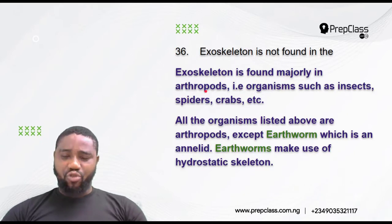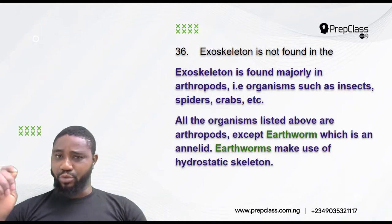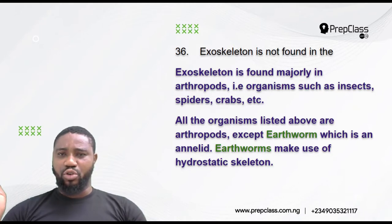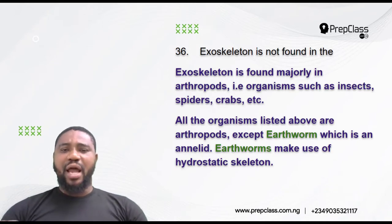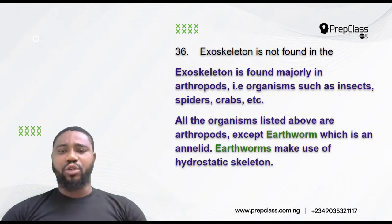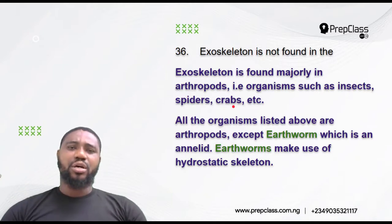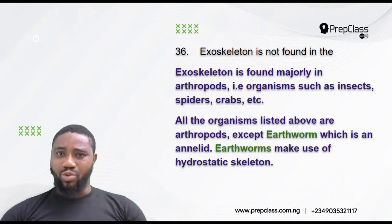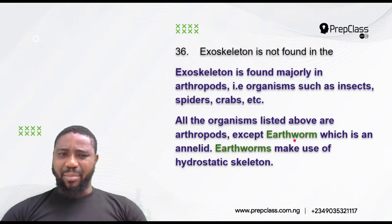The exoskeleton is made of chitin, a carbohydrate material. It is not a living tissue so it does not grow. All organisms that have this skeleton must periodically molt — shedding the exoskeleton from time to time in order for them to grow. Exoskeletons are found in arthropods, which include insects, spiders, crabs, shrimp, millipedes, and centipedes. All organisms listed are arthropods except the earthworm, which is a soft-bodied organism belonging to the annelids.